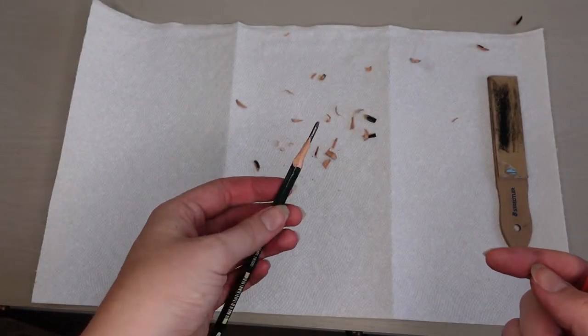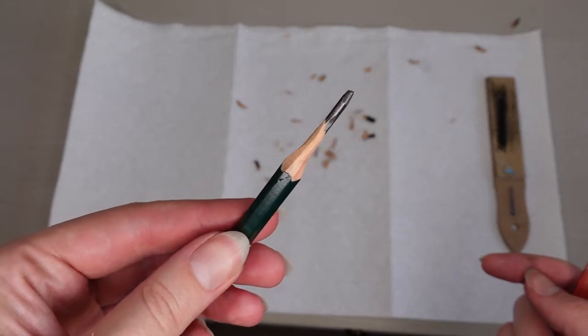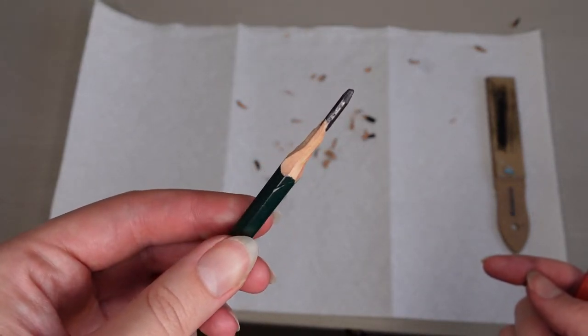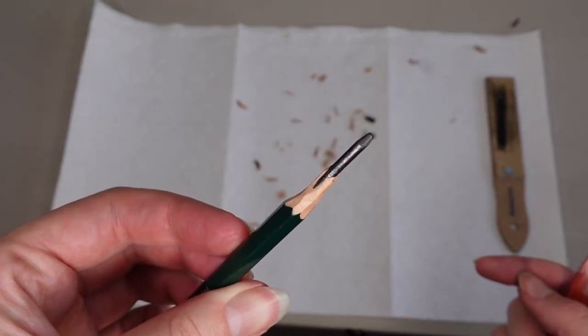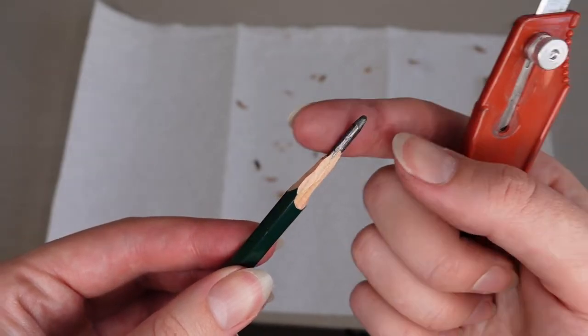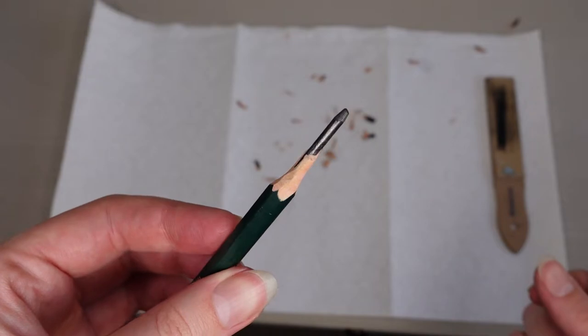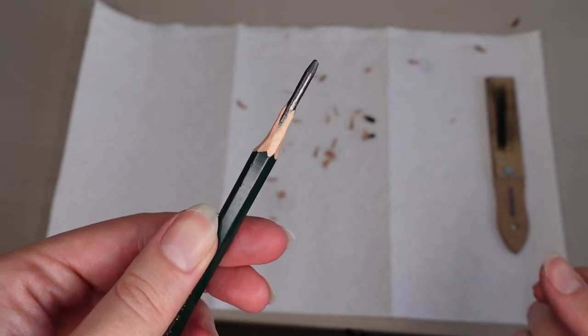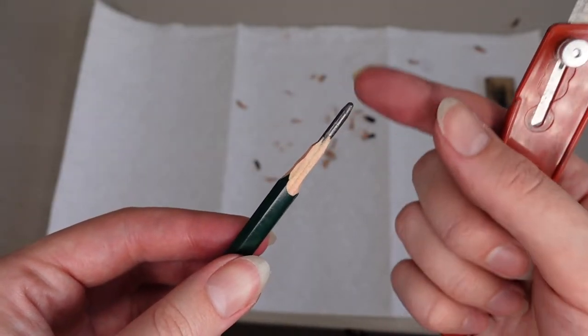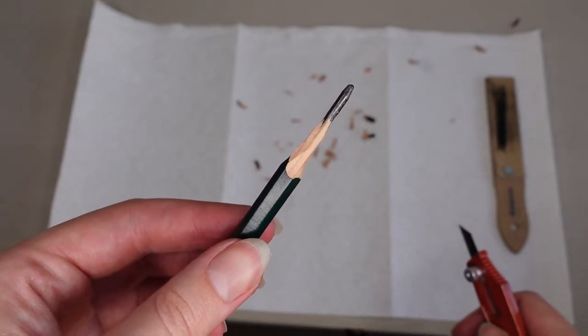So now, as you can see, there's a lot of lead exposed there. But as you can see, it's kind of jagged looking. It's not necessarily smooth all the way around, and the point is sort of dull and blunt. I want a nice sharp point and I want it to be smooth all the way around. So that's where the sandpaper comes in.